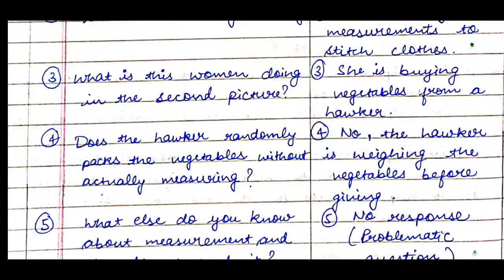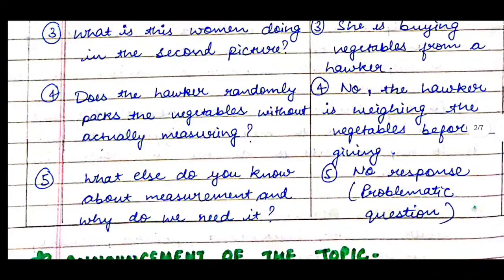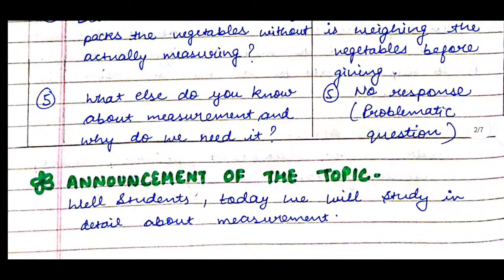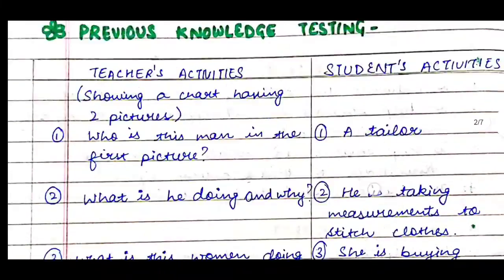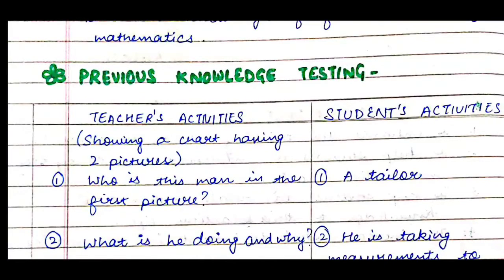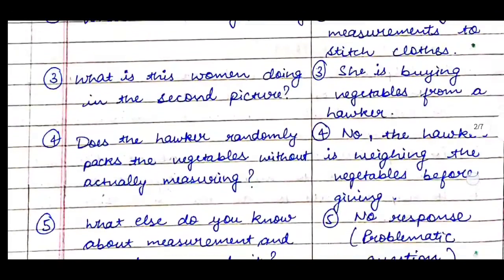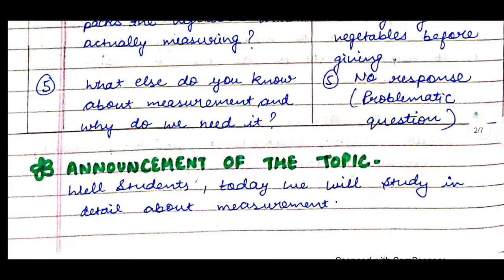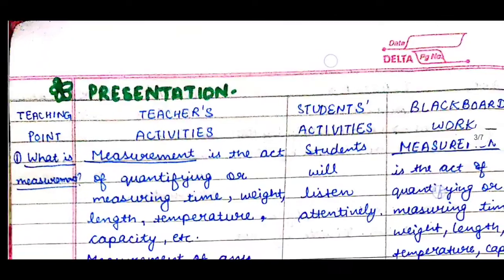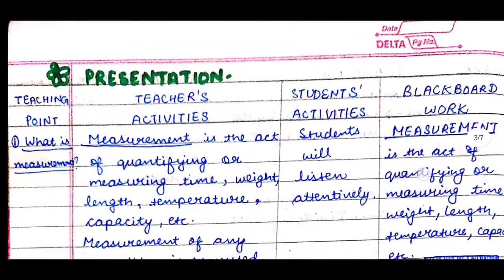The teacher will ask: 'What is the woman doing in the second picture?' Students answer: 'She is buying vegetables from a hawker.' Then: 'Does the hawker randomly pack the vegetables without measuring?' Students answer: 'No, the hawker is weighing the vegetables before giving.' The last question: 'What else do you know about measurement and why do we need it?' — a problematic question they won't fully answer. Then we announce our topic: 'Students, today we will study in detail about measurement.'